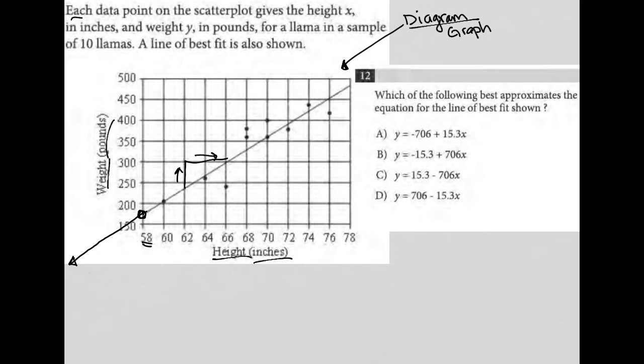Looking at the information here, it says each data point on the scatter plot gives the height x in inches and weight y in pounds for a llama in a sample of 10 llamas. A line of best fit is also shown. We already saw our line of best fit, and each of these points represent a llama. Some of them are on the line, a lot of them are above the line, some of them below the line. Question 12 asks: which of